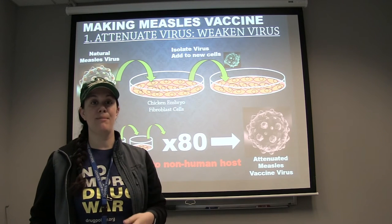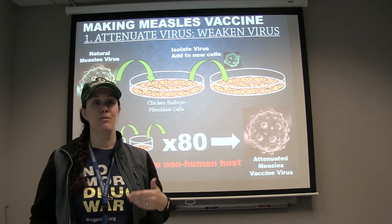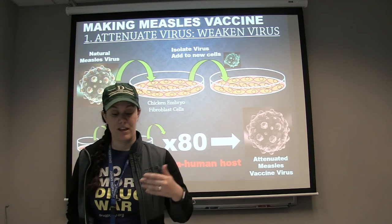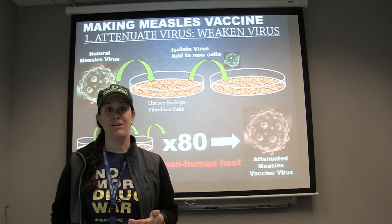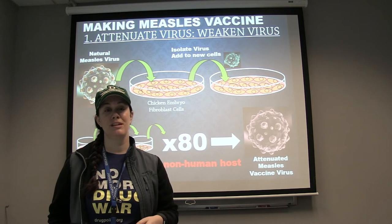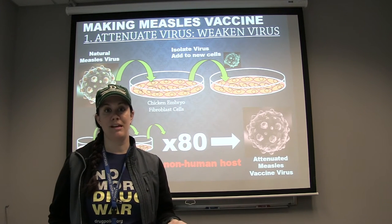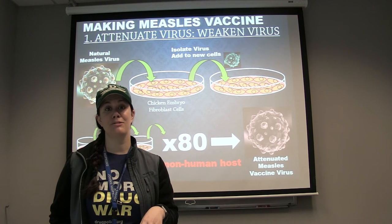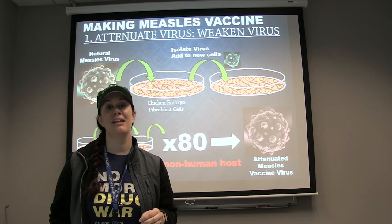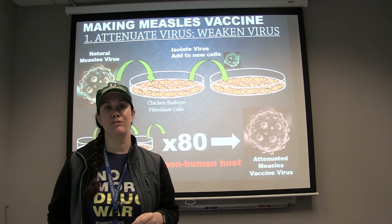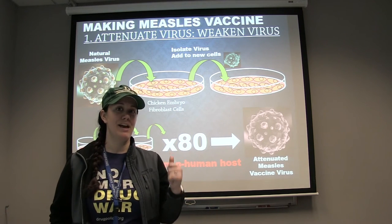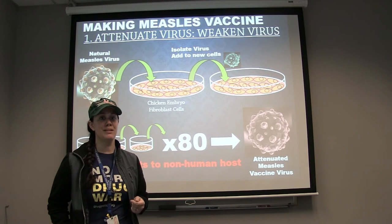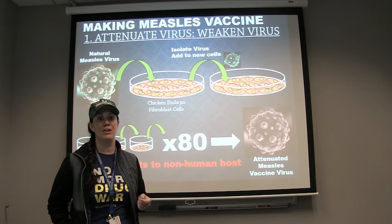Over time, the virus adapts and mutates little by little. Then when we put the adapted measles virus back into a human host, it can't replicate efficiently — so it's not going to make you sick and it's not going to make you contagious, but it is going to elicit a long-lasting memory response. This is the process of how we attenuate measles virus in a non-human host.